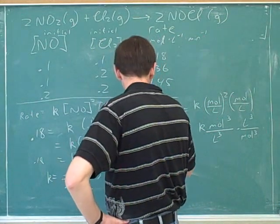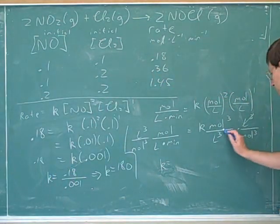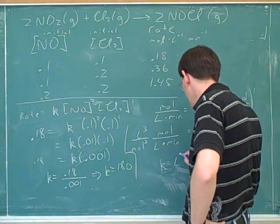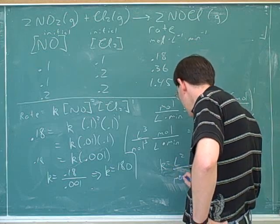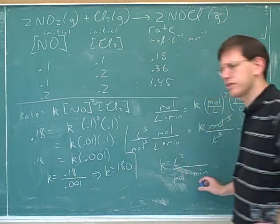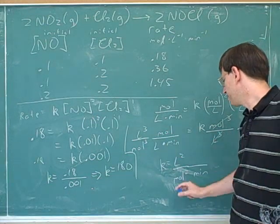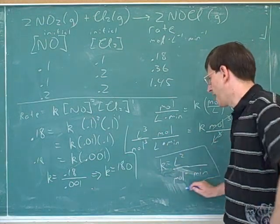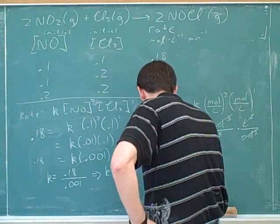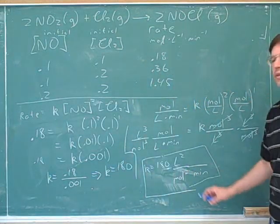But then algebra says you have to multiply this side by that reciprocal as well. So the cubic liters will cancel, and now k is by itself. Now over here, we're going to get liters squared over moles squared over minutes. Is this what you got? Yeah. So liters cubed divided by liters is liters squared. Moles cubed divided by moles is moles squared, and we have minutes. So actually, k is 180 liters squared per mole squared per minute.